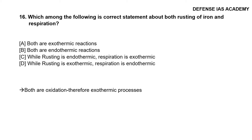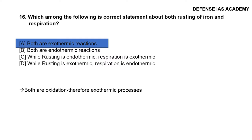Question 16: Which among the following is the correct statement about both rusting of iron and respiration? The options are: A. Both are exothermic reactions; B. Both are endothermic reactions; C. While rusting is endothermic, respiration is exothermic; D. While rusting is exothermic, respiration is endothermic. The correct answer is option A, both are exothermic reactions.